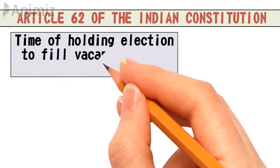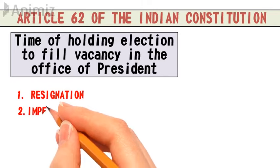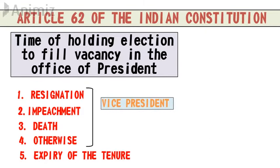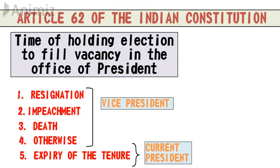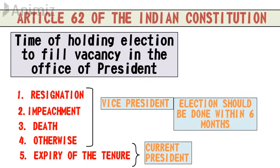Article 62 of the Indian Constitution talks about the time of holding elections to fill a vacancy in the office of President. There are five cases in which the President's post becomes vacant: first, resignation; second, impeachment; third, death; fourth, otherwise — for example, if the election is declared void by the Supreme Court; fifth, expiry of the five-year tenure. In the first four cases, the Vice President becomes President, and an election must be held within six months. In the fifth case — expiry of tenure — the existing President continues until a new President is elected.